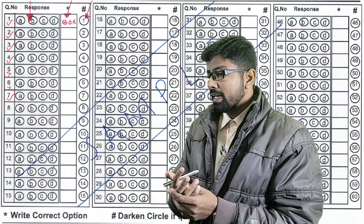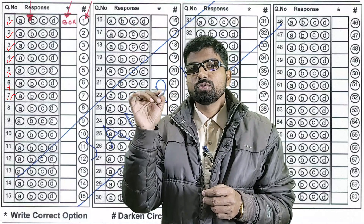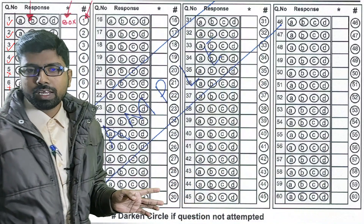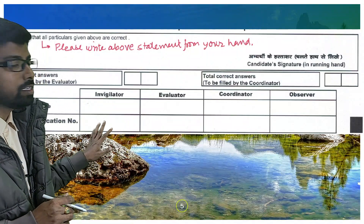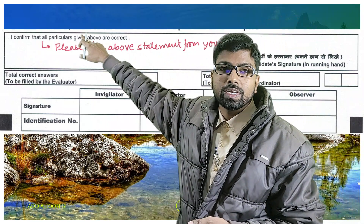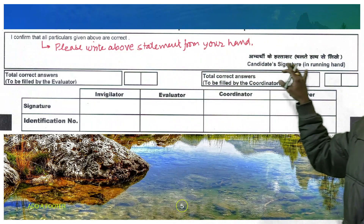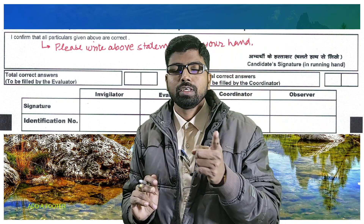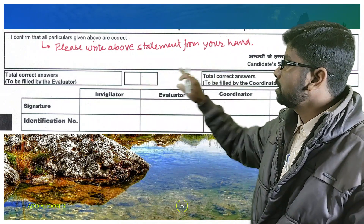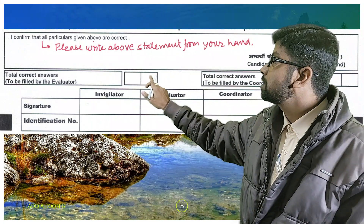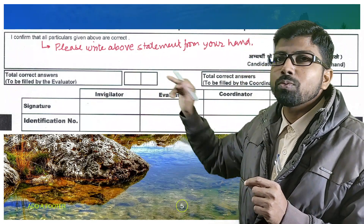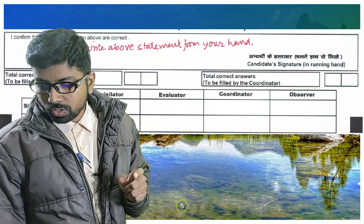Remember that evaluators will be using red ink for marking. This is important. Regarding the last part of the OMR sheet: students will write the exact declaration sentence in the designated box and sign with a running hand signature. The invigilator — meaning assistant superintendent — must guide the student through this in the classroom. In the final marks box, the evaluator will count the total correct tick marks and write the final score in red ink only.